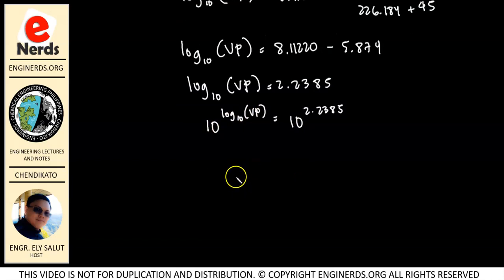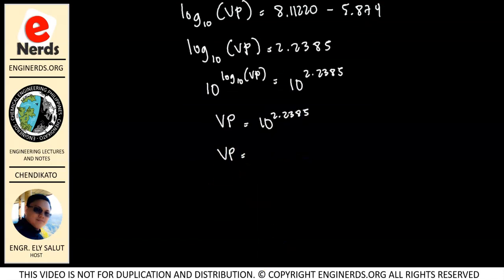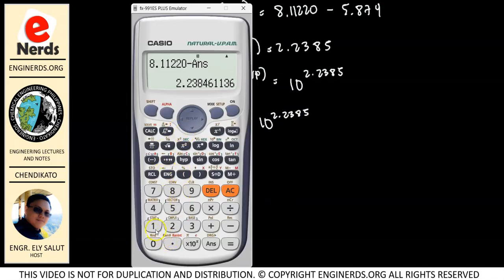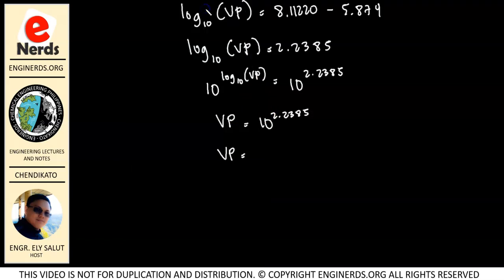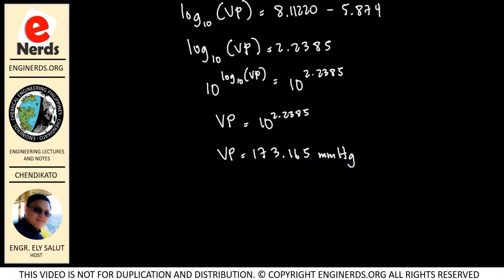So the vapor pressure will be equal to 10 to the 2.2385, which using our calculator gives us 173.165. Our unit will be in millimeter mercury. So 173.165 mmHg is our answer for the first problem.